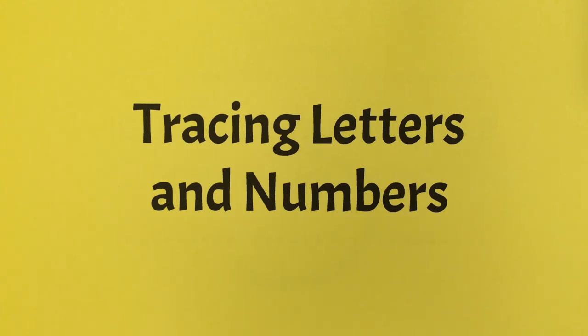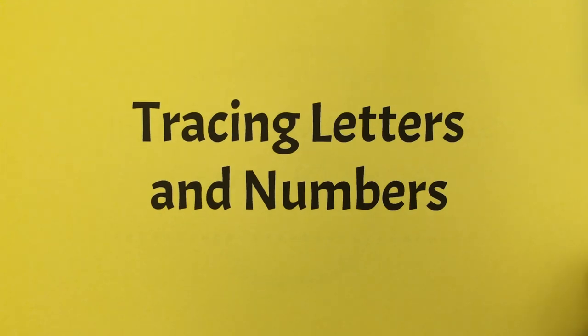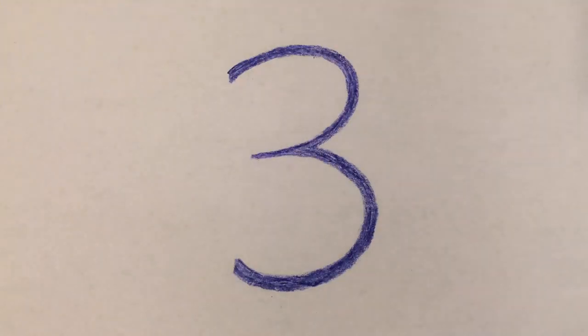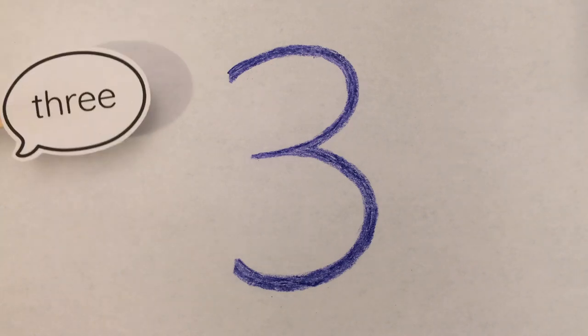You can prepare a child to learn how to write by tracing letters and numbers. You can write down a number or letter and tell the child what it is. For example, this is the number 3.